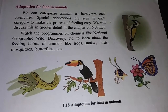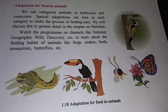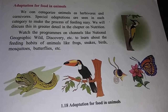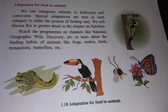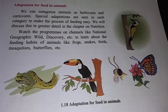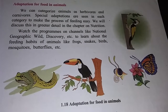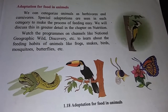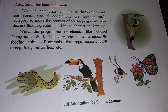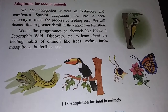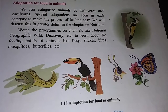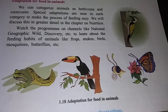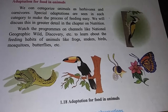Omnivores are animals which can eat both plants and flesh of other animals. For example, bear and human beings. Human beings eat vegetables and fruits as well as the flesh of other animals.